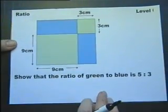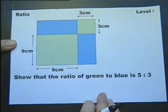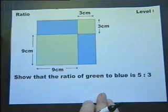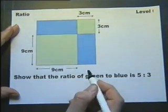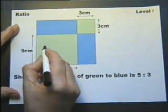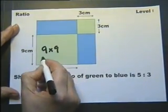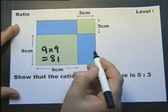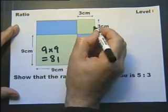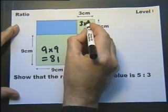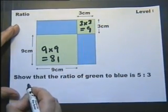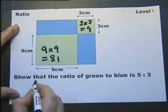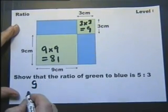Ratio. Show that the ratio of the green to the blue is in fact 5 to 3. So we're talking about the area. So the green, the area of this bit is 9 nines for 81. The area of this bit is 3 threes and 9. So the total green is these two added together, which is 90.